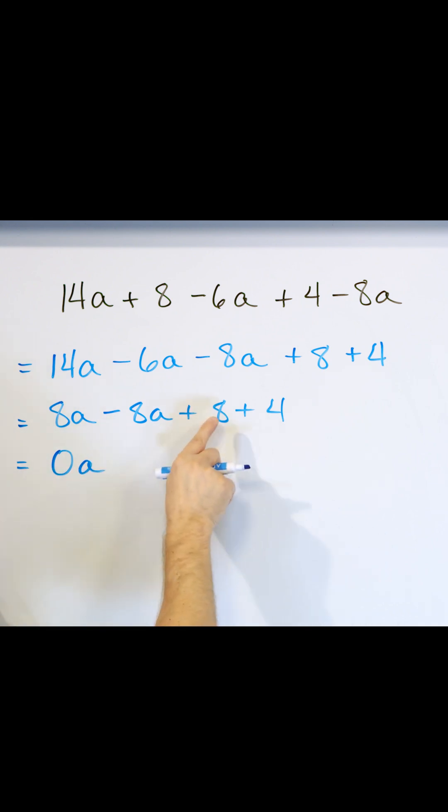And let's go ahead and add these. 8 plus 4 is 12, so plus 12. Now, what is 0 times a? Remember, a can be a number, but 0 times anything is just 0, so this whole thing just goes to 0. So really, all you have is positive 12. That's really the final answer.